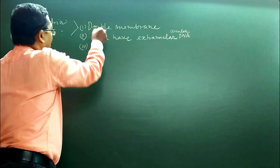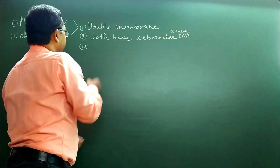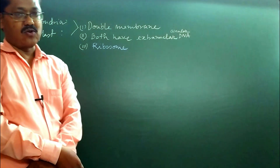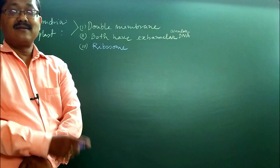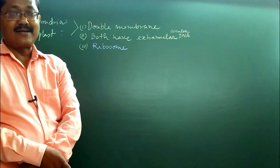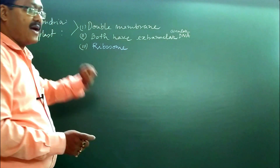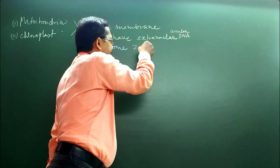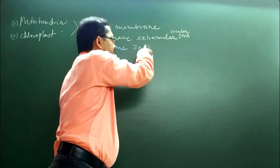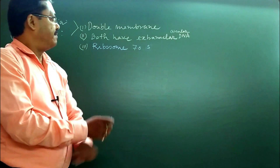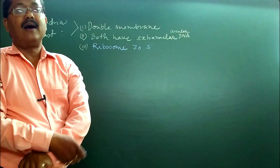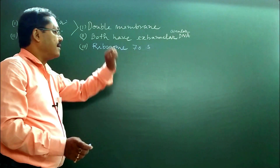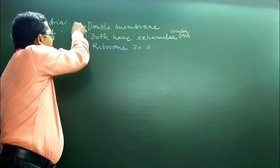Third similarity: both of these two organelles contain ribosomes. Ribosomes are also present in the cytoplasm in eukaryotes, but their size is somewhat greater than the mitochondrial or plastid ribosome. The ribosome size here is 70S. 'S' means sedimentation coefficient by Svedberg, from which the size and density of the ribosome are measured. These are three common characteristics.